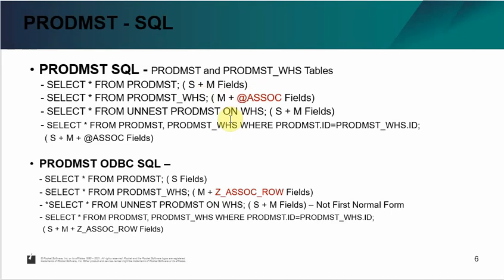On the ODBC side, you can use a SQL join to combine single-value and multi-value data in one SQL statement. On ODBC it is a little different: by default, if you SELECT * FROM prod_MST, you only see single-value data. If you also want multi-value data, you need to query the _WHS table. But if you want to join them together, you can use a SQL equal join to get both single-value and multi-value data together.